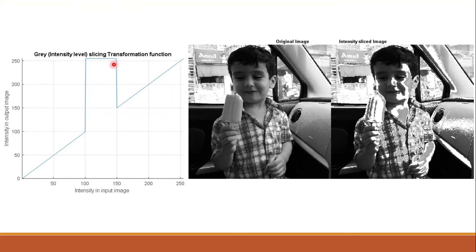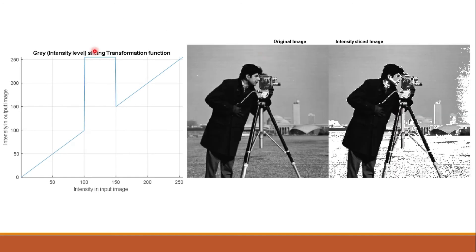When we use the second transformation function — highlighting values between 100 to 150 and keeping all other values intact rather than making the image binary — the output image is not binary, but it highlights specific values ranging from 100 to 150 and makes them 255. For example, the ice cream has values between 100 to 150 and therefore becomes white. Similarly, other portions with those values also become white. When the same is applied to the cameraman image, values between 100 to 150 become white while all other values are kept intact.